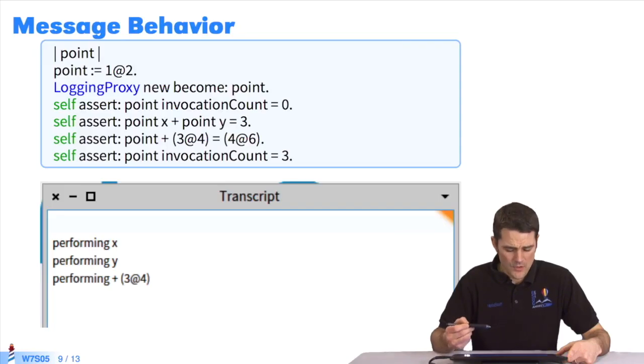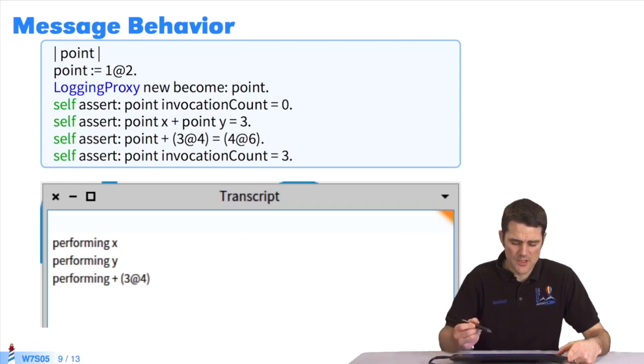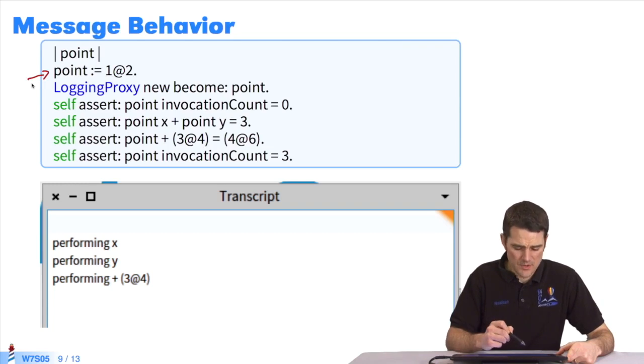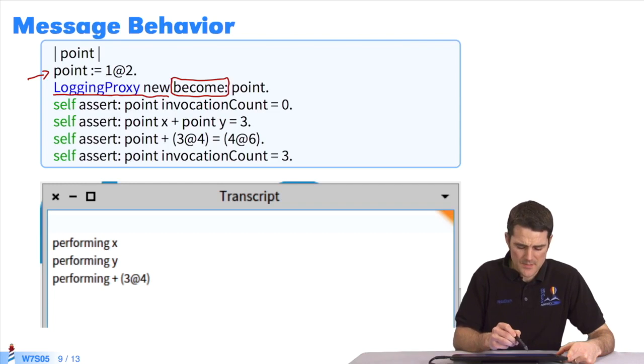Let's look at an example. How do we use this logging proxy? We'll create an instance, the object point. Then we'll use become, so that everything that points to this point will inadvertently point to a logging proxy, which we instantiate. Now if we send messages to the object point, noting that become is now an instance of logging proxy.